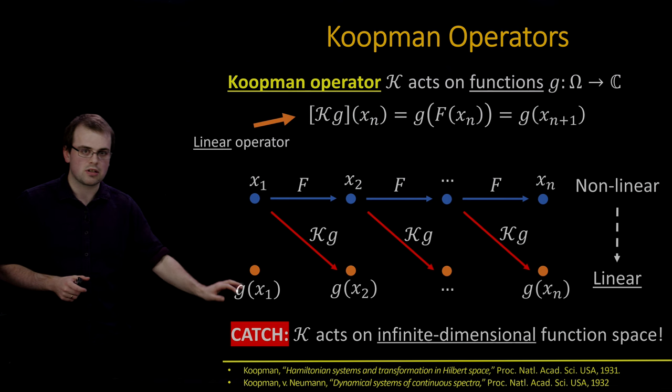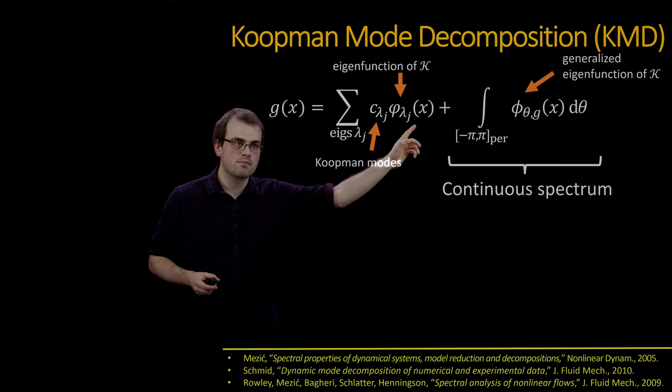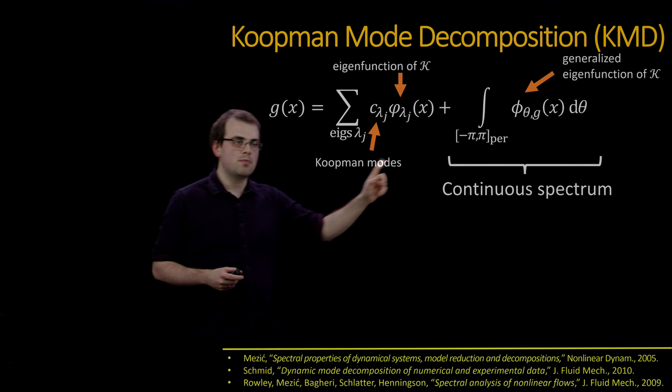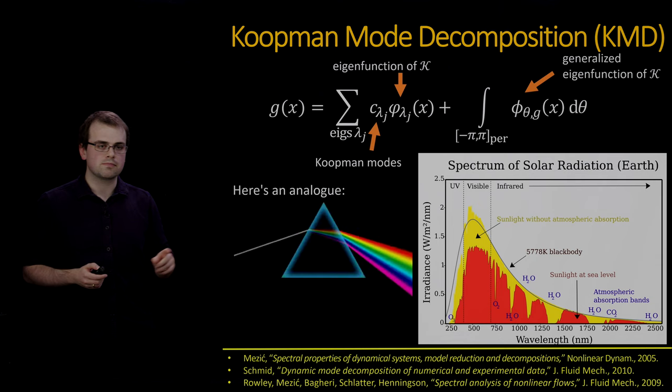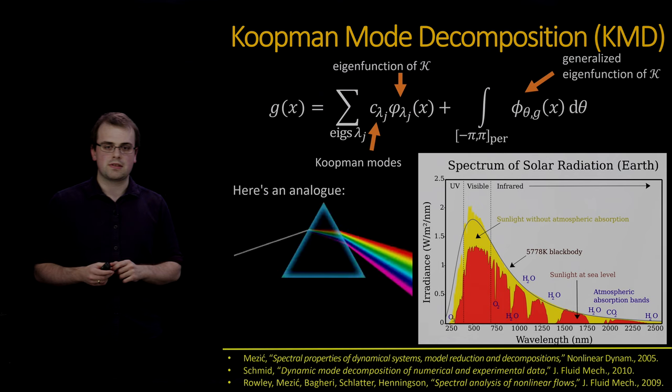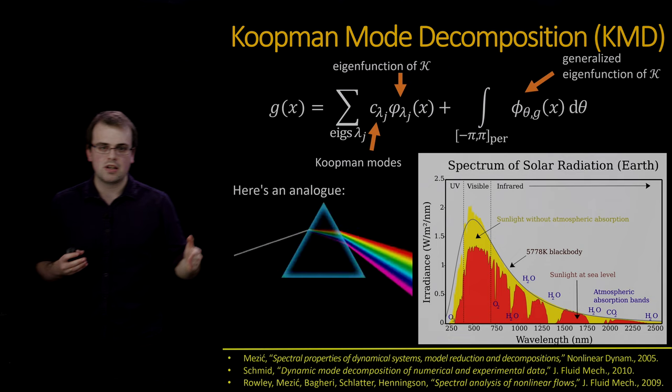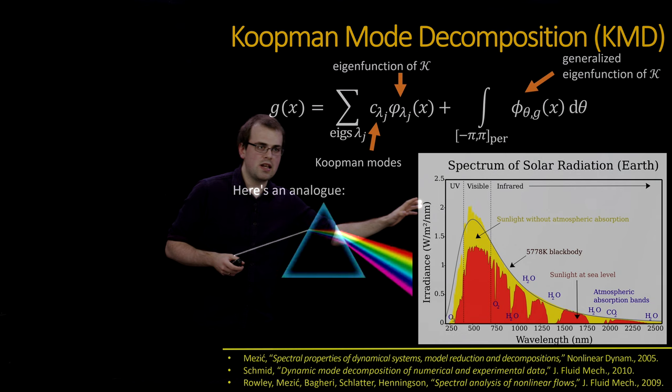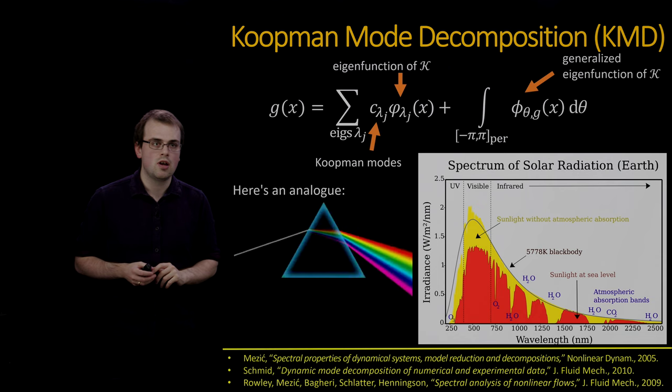This looks absolutely fantastic. We've gone from something possibly horribly nonlinear to something linear. But there is a catch: the Koopman operator acts on an infinite dimensional function space. Although you're in infinite dimensions, the linearity still allows you to say lots of useful things about the dynamical system if you could somehow capture this Koopman operator. For example, under suitable conditions, you can expand an observable g in terms of eigenfunctions, whose coefficients are known as Koopman modes, and also something that I've labelled the continuous spectrum, which is an integral over generalized or non-normalizable eigenfunctions.